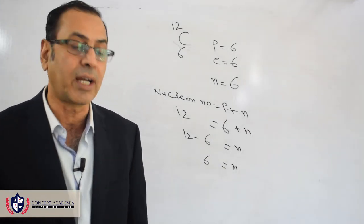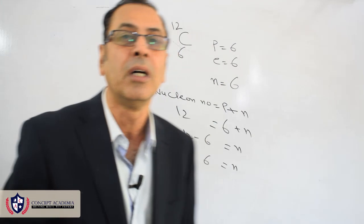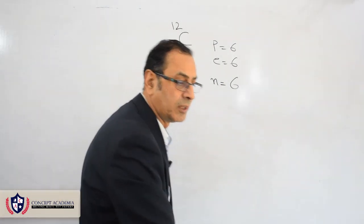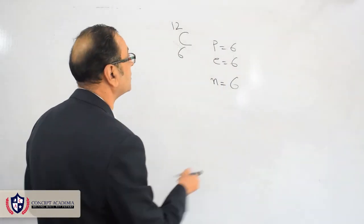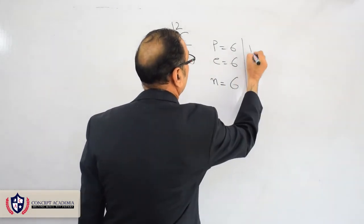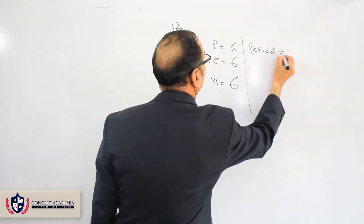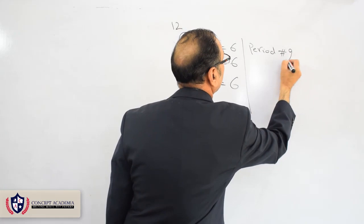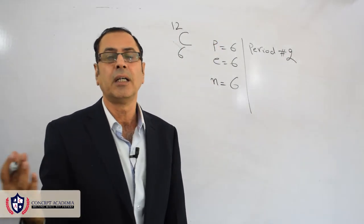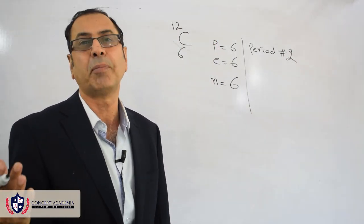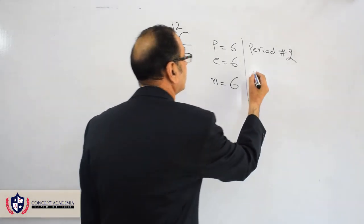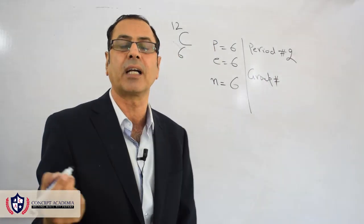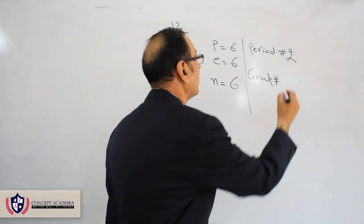Next, I will find out which period number and which group number carbon belongs to. Carbon belongs to period number two. If you look at the periodic table, you can find carbon in period number two. And from the periodic table, carbon belongs to group number four.